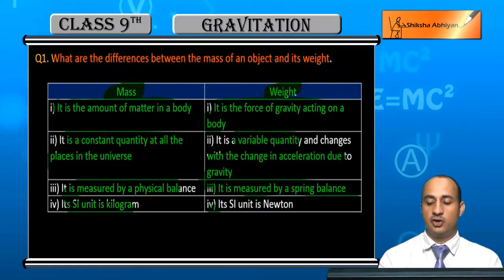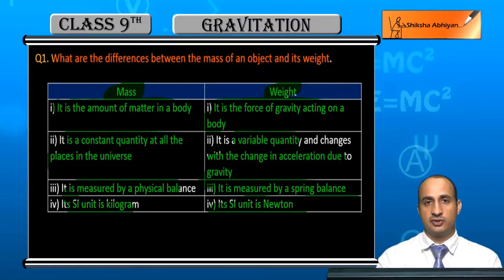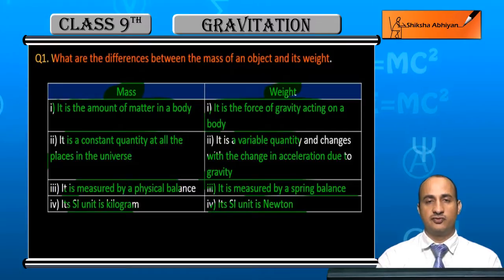The SI unit is kilogram for mass and Newton for weight. These are the differences between mass and weight.